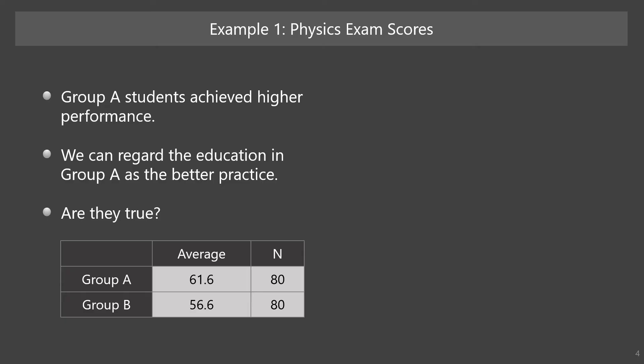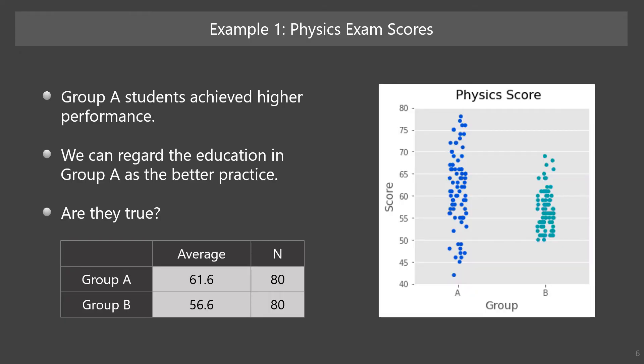Can I say that? How do you think? There can be various opinions. For example, yes, you can say that. Or, a 5-point difference is not so large as an average of an exam whose perfect score is 100. What if we get the information of score distribution? This figure shows the distribution of score for each group. As we can see, the score of group A is more widely spread than that of group B. In group A, some students got good scores, but some others got very poor scores. Thus, it is questionable to conclude that group A students are better in the exam than group B.